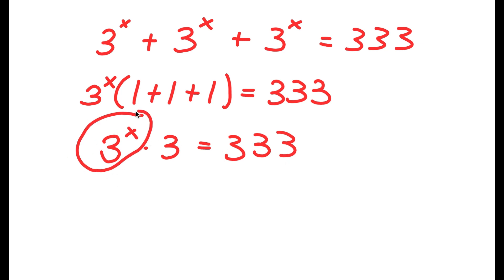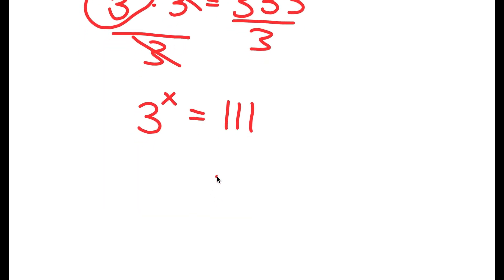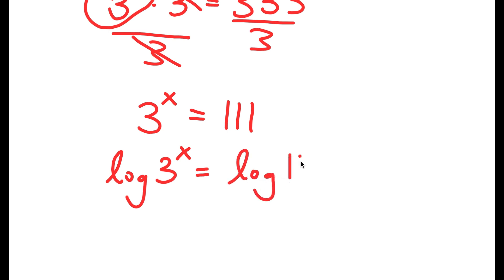We want to isolate 3 to the power of x, and the way to do that is to get rid of the times 3 by dividing both sides by 3. So now I get 3 to the power of x is equal to 111. If I take the log on both sides, I get log 3 to the power of x is equal to log 111.